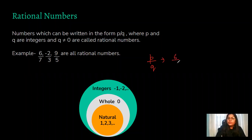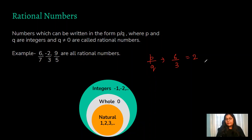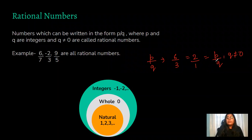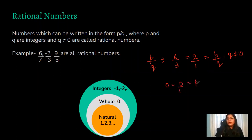For extra examples: six upon three can also be written as two, and two is a rational number because we can write it as two upon one, where p is two, q is one, and q is not equal to zero. Also, zero is a rational number — we can write zero as zero upon one, which is in the form p by q where p is zero and q is one.